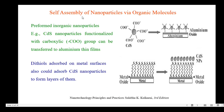Next, we are going to see self-assembly of nanoparticles via organic molecules. Let us take preformed inorganic nanoparticles — that is CdS nanoparticles functionalized with the carboxylic group — that can be transferred to an aluminium thin film. It is then coated with an aluminium oxide layer. The self-assembly of CdS nanoparticles occurs over this aluminium oxide layer.